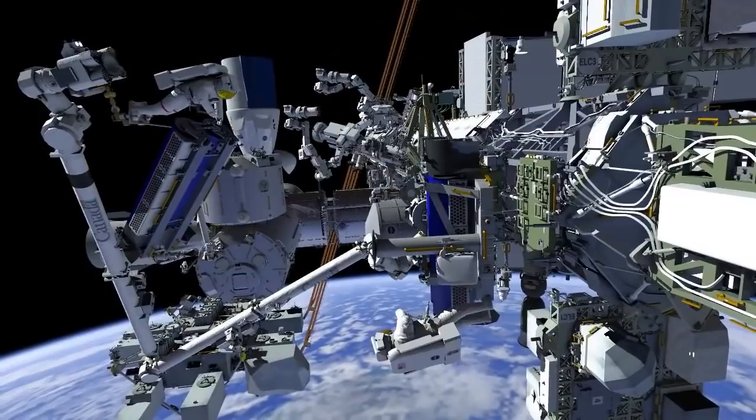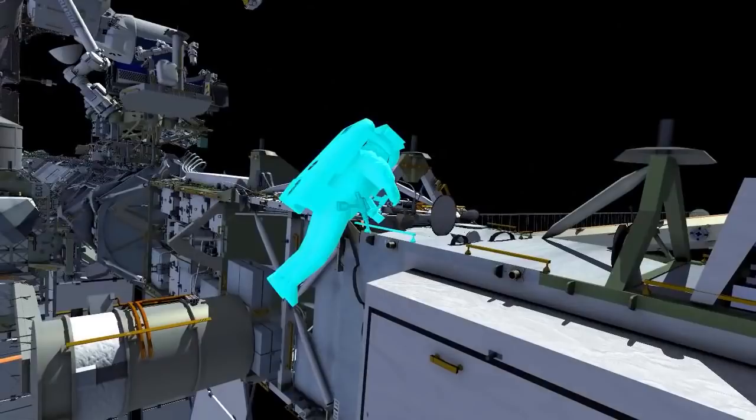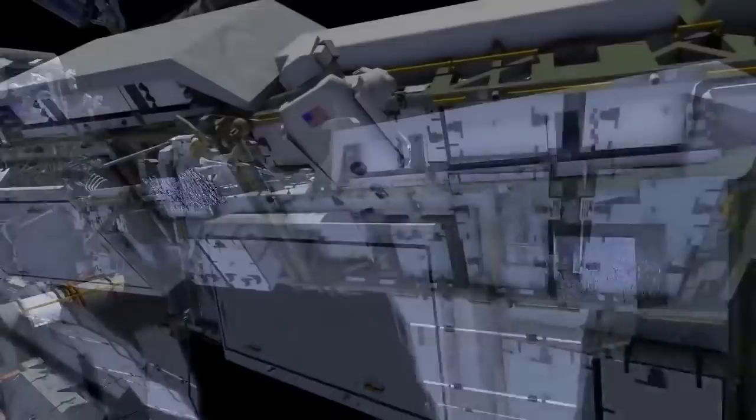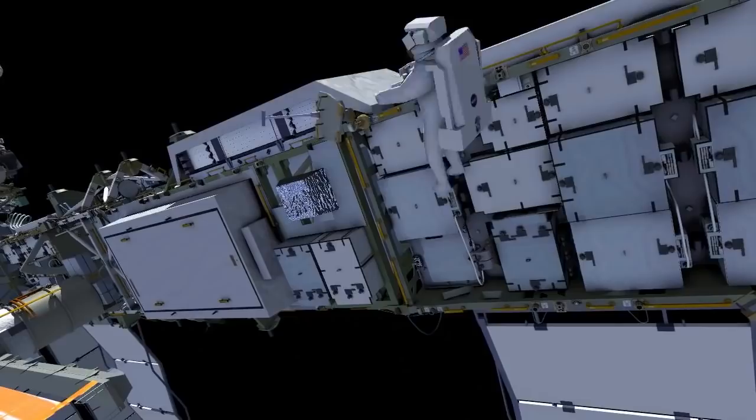Meanwhile, Shane gets off of the carrier and translates outboard. He'll stow Thomas' safety tether hook in preparation for when Thomas comes off of the arm, and he'll continue his path outboard. He stows his pistol grip tool, makes his way to his foot restraint, and ingresses.